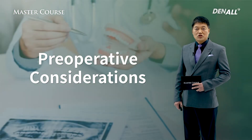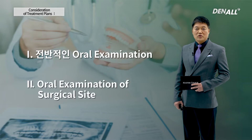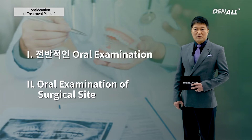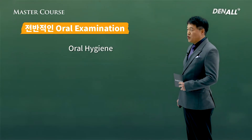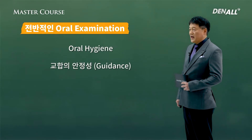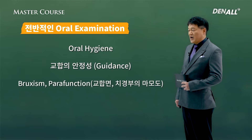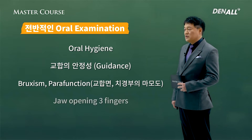Preoperative considerations. First, general oral examination, and second, oral examination at the surgical site. Items to check during a general oral examination: first, oral hygiene; second, stability of occlusion; and third, whether there is parafunction. The wear of the occlusal surface needs to be evaluated.